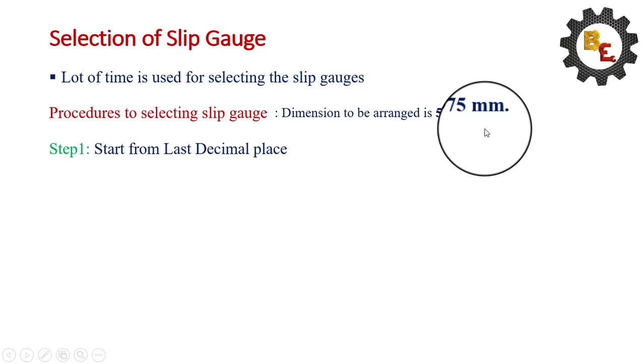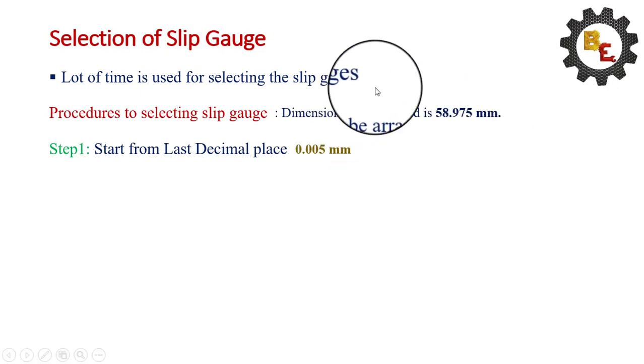Step 1. Start from the last decimal place. Here the decimal place is 5, that is 0.005 mm. So we have to select the slip gauge of 1.005 mm.